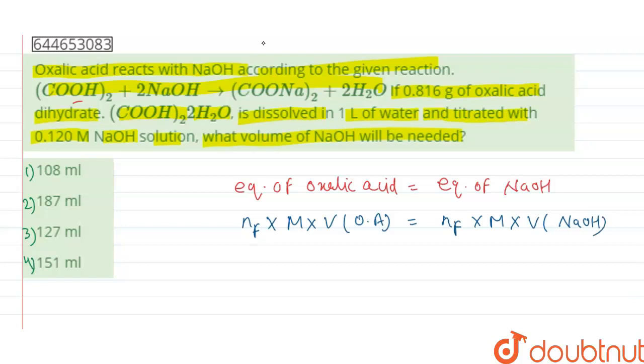Now, the N-factor of oxalic acid—since 2H+ is given by oxalic acid—the N-factor will be 2, times molarity.